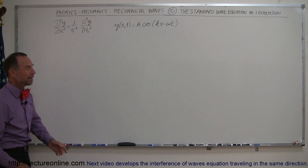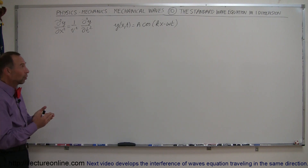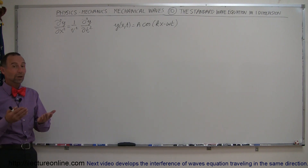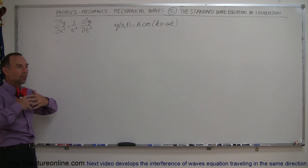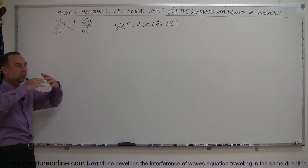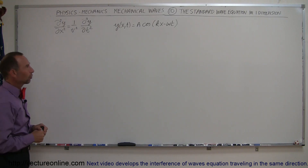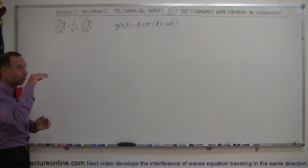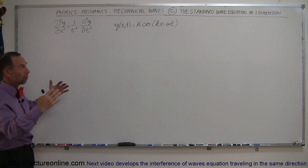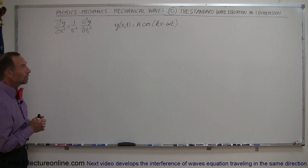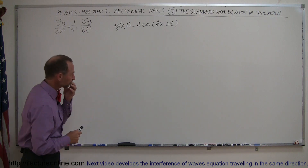What does that even mean? Well, that is what we call the standard wave equation. We can do that in one, two, or three dimensions, but it describes a wave moving out with oscillatory motion either in one dimension, in a planar dimension, or in three dimensions. We're just going to take the one-dimension case.